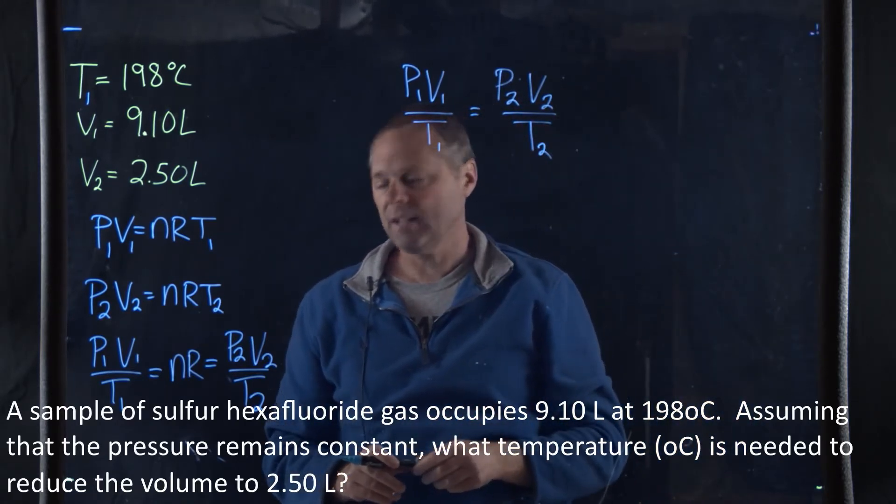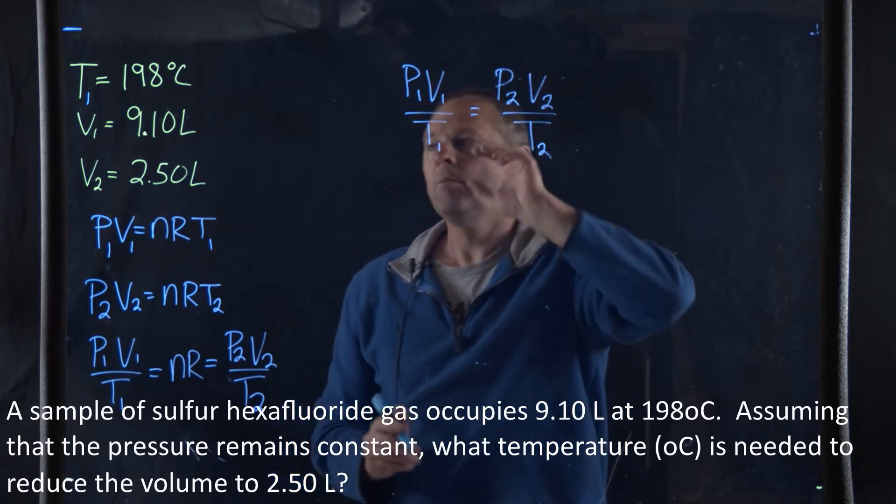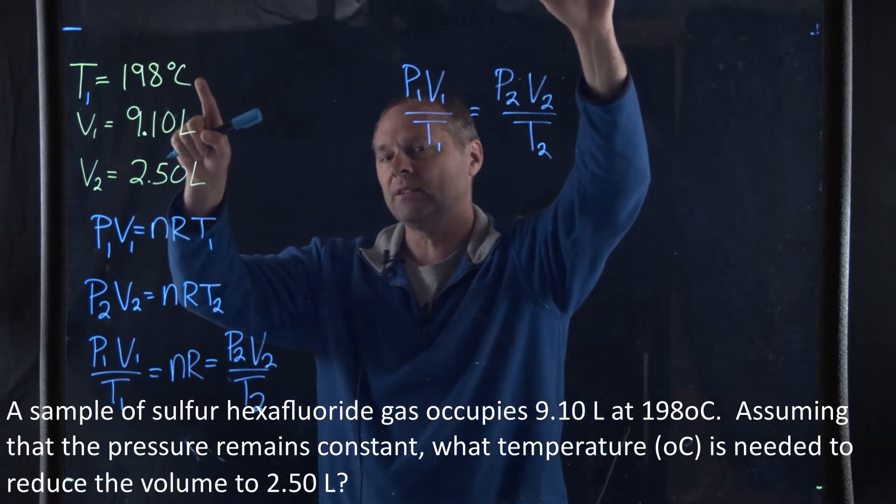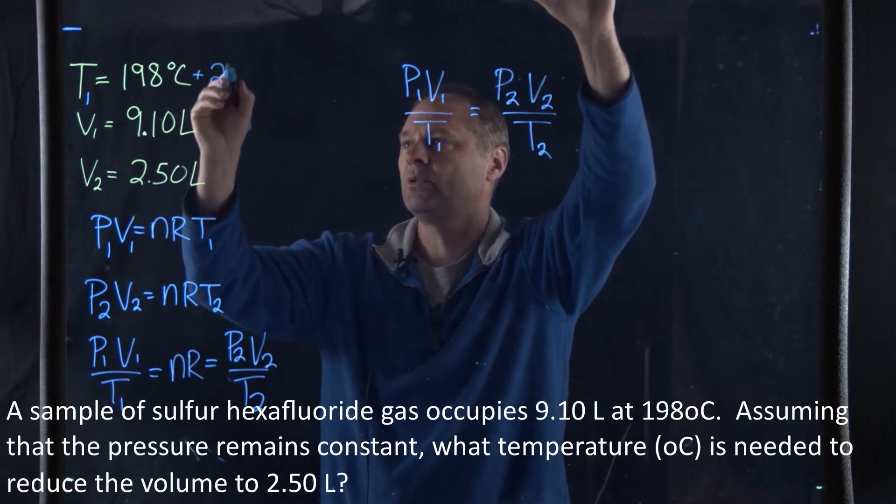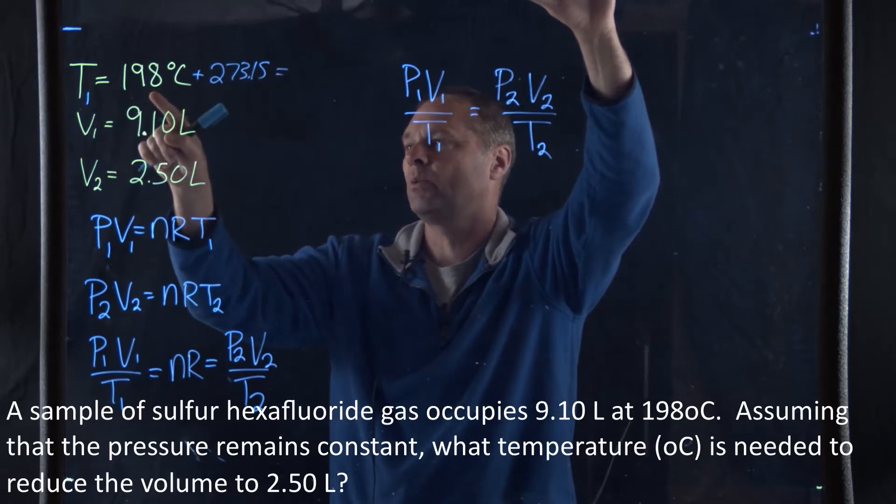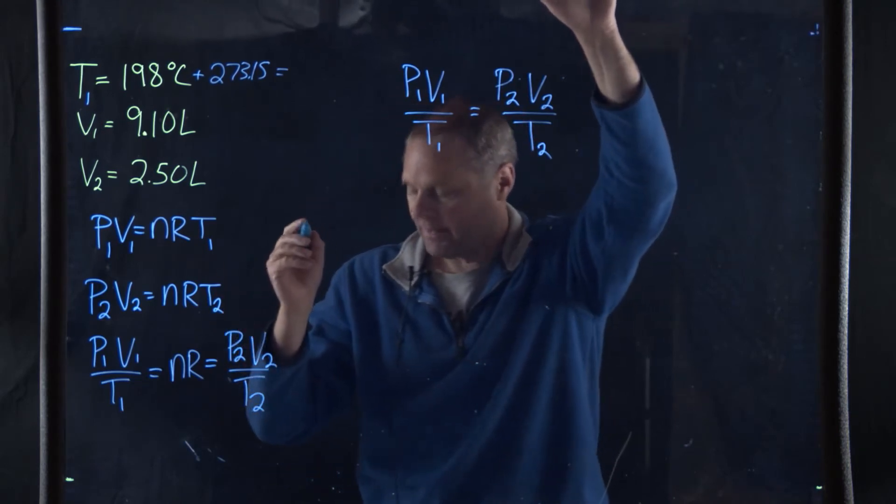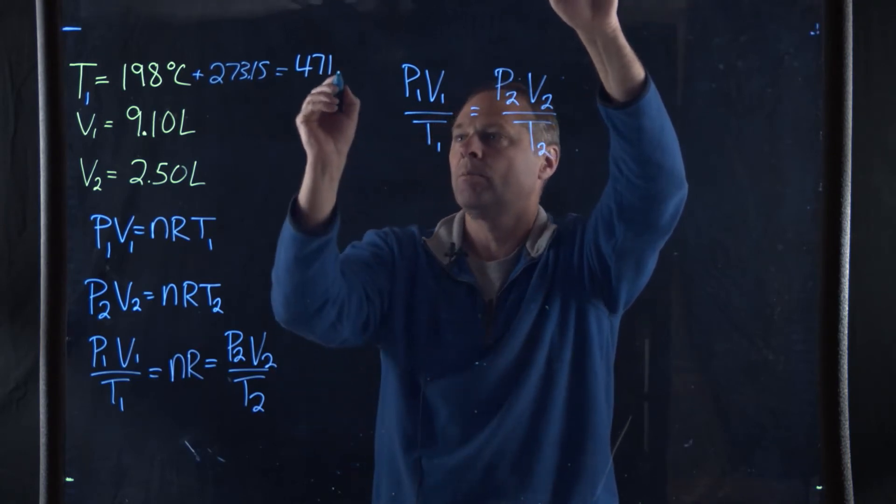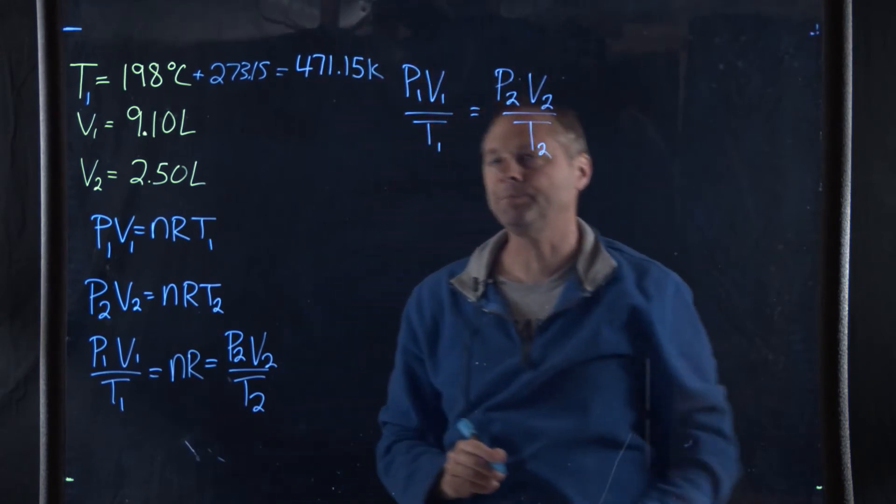Now we can just start plugging in our variables into this. But we've got to do a few things yet. This is in degrees Celsius, and we may have to have this in terms of Kelvin. To add it to Kelvin, we add 273.15. If we add 273.15 to 198, that's going to give us the temperature in Kelvin. And that becomes 471.15 Kelvin. So that's going to be our temperature T1 in Kelvin.